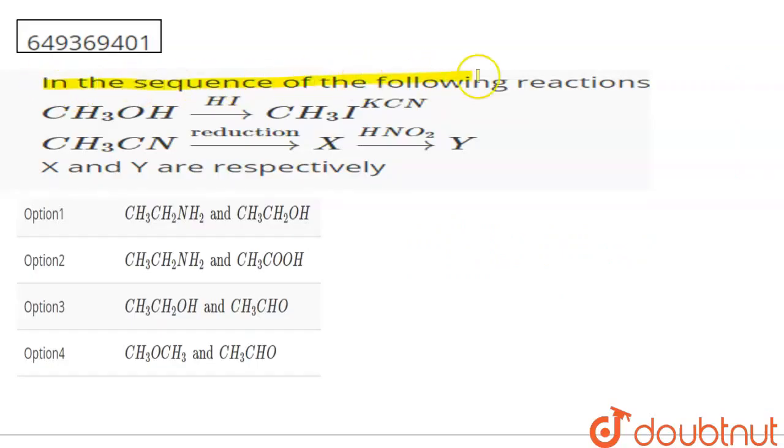Hello students, the question is about the sequence of the following reactions. We need to find what will happen in X and Y. The sequence of reactions: we have CS3OH with HI, CS3OH reacts in the presence of HI to form CS3I, then with KCN to form CS3CN.